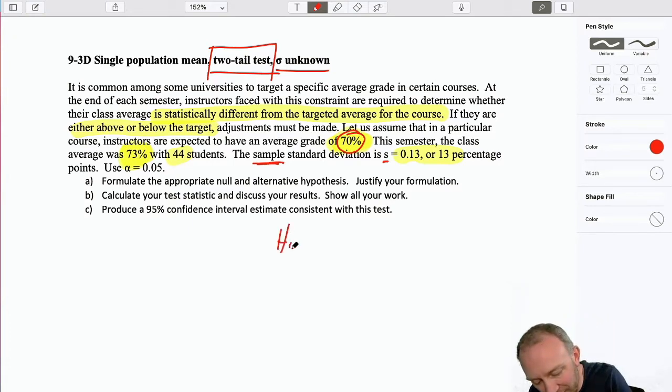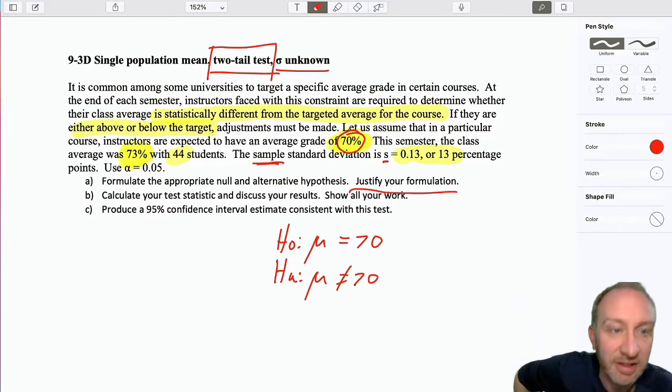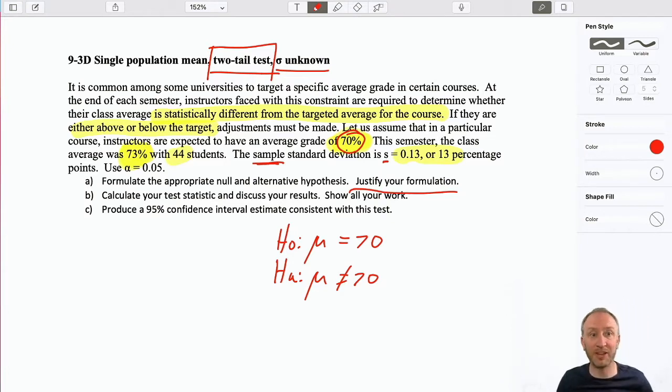So that is what's telling me that this is a two-tail test. So is that average consistent with this target of 70 percent, or is it different from that target of 70 percent, in which case some adjustments will need to be made? If the evidence supports the null hypothesis, I don't need to make any adjustments. If the evidence supports the alternative hypothesis, then some adjustments should be made.